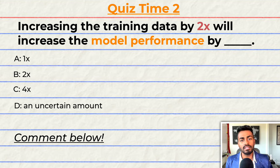It's that time of video again. Have you been paying attention? Let's quiz you to find out. Increasing the training data by two-fold will increase the model performance by A, one-fold, B, two-fold, C, four-fold, or D, by an uncertain amount. Comment your answer down below and let's have a discussion. Now that's going to do it for quiz time for now. But keep paying attention because I will be back to quiz you.